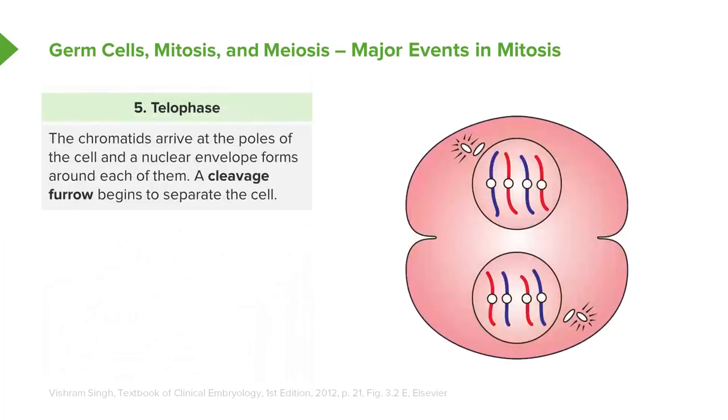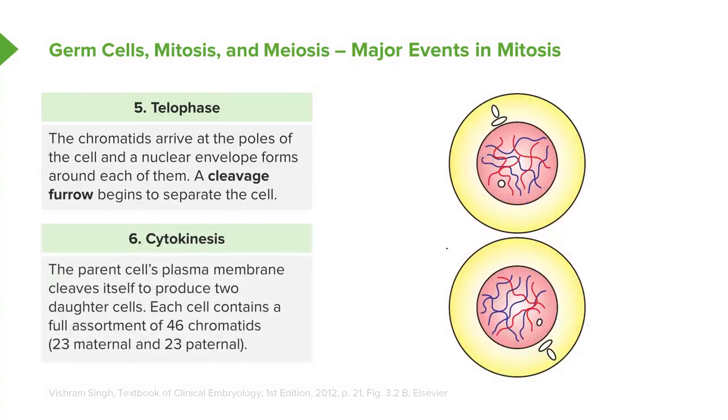During telophase, we have a new nuclear envelope form around each one of the daughter nuclei and a cleavage furrow or a little divot appears in the parent cell and it's going to get tighter and tighter until eventually it splits and we undergo cytokinesis, splitting of the cell, to form two new daughter cells from the single parent cell.